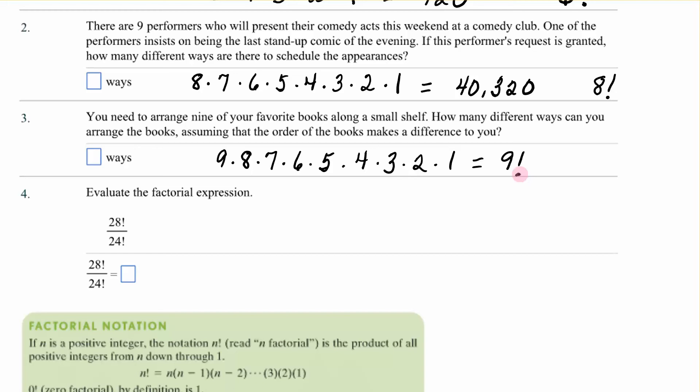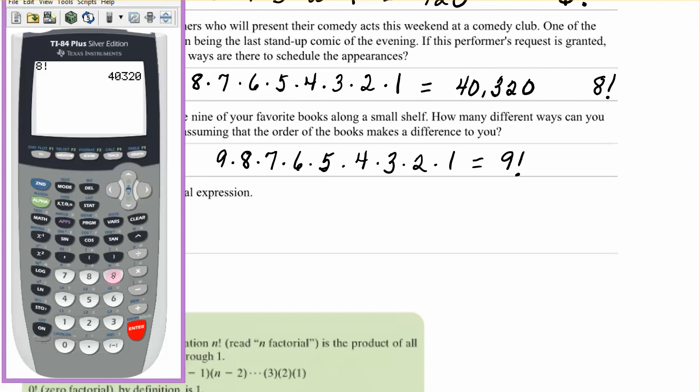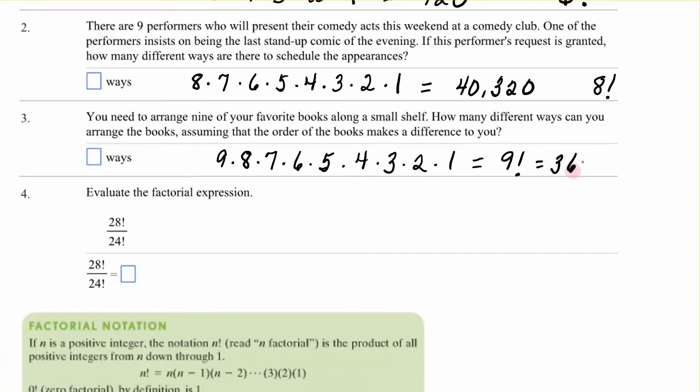Let's use our calculator to do that. Nine, math, to the right, to probability, choose number four. Takes you back to the home screen with an exclamation point, which is the symbol for factorial. Enter. And we have 362,880. There are a lot of ways those nine books could be up there.